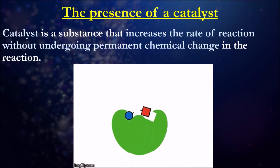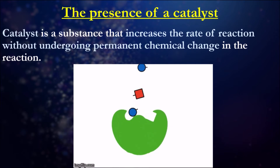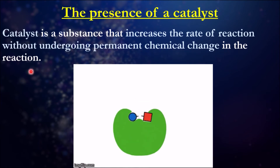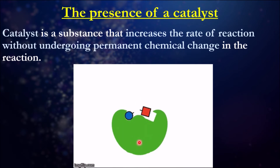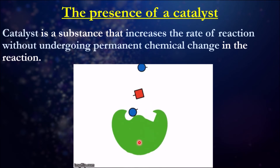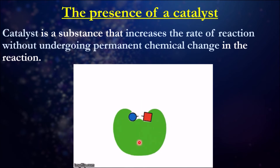Let's start with the presence of a catalyst. A catalyst is a chemical substance that increases the rate of reaction without undergoing a permanent chemical change. It's like a matchmaker - it brings two things together in the correct orientation and plugs them together. It is not itself part of the reaction; it just helps facilitate the reaction to occur.